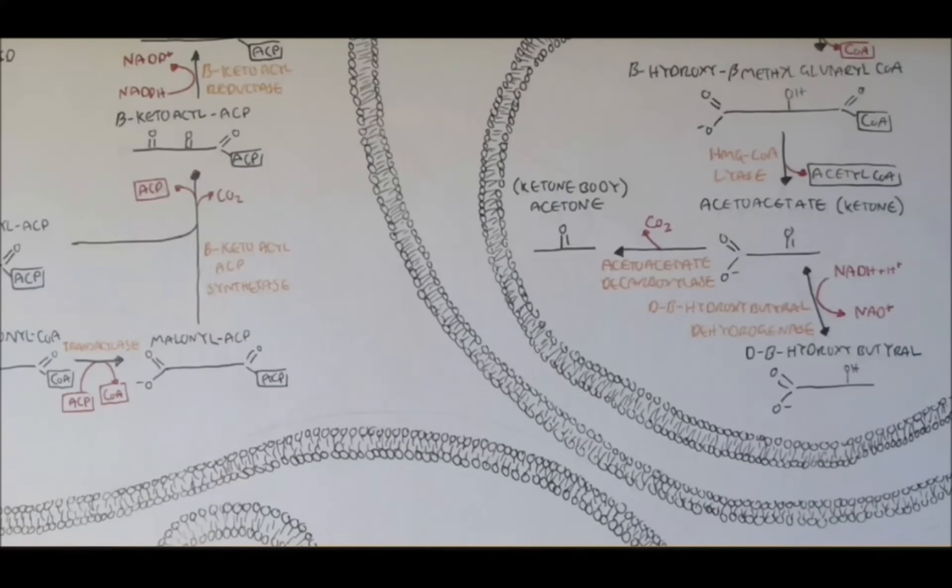So those are our ketone bodies: acetone, acetoacetate, and D-beta-hydroxybutyl. And that actually ends this metabolism map, which is just the one big page. However, next, hopefully, we'll look at the Krebs cycle.